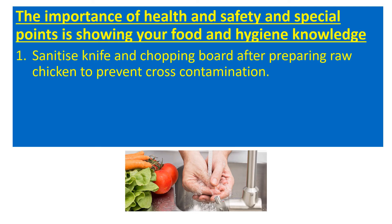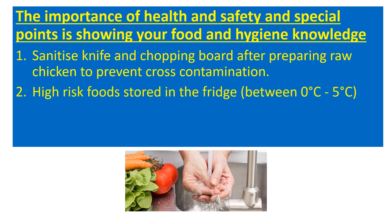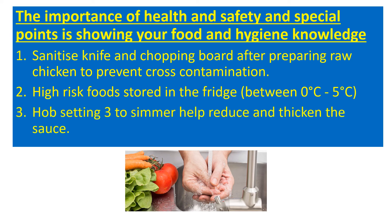The importance of health and safety and special points — examples include sanitizing knives and chopping boards after preparing raw chicken to prevent cross-contamination; high-risk foods stored in fridges; temperature ranges for extra knowledge — fridges: 0°C to 5°C is a typical fridge temperature; hob settings — whether you're working with gas or electricity, let it be known and tell yourself what works best. You can always change the time plan as it goes on.